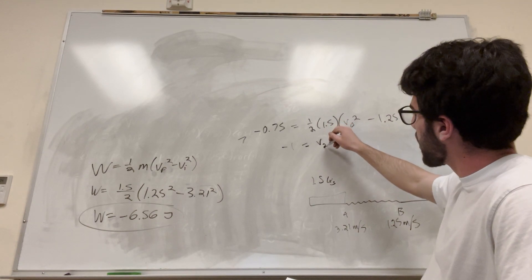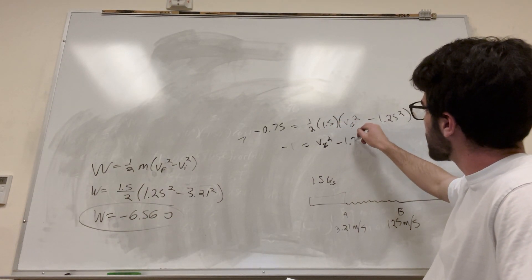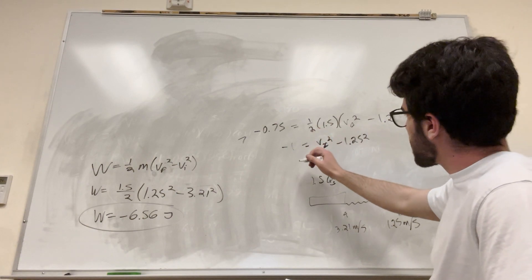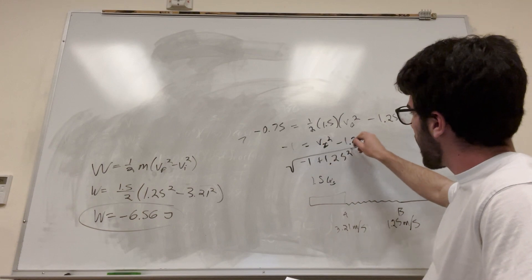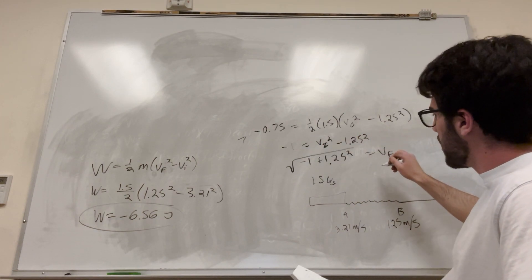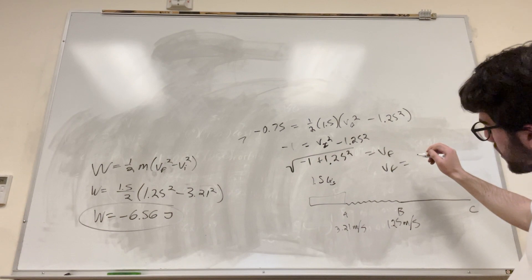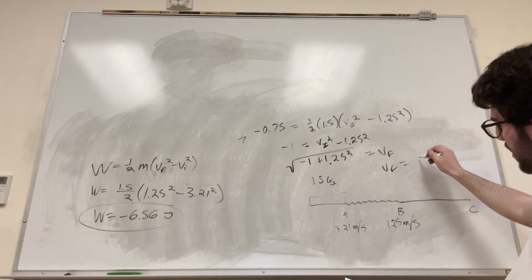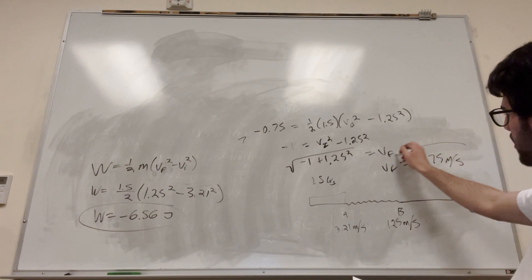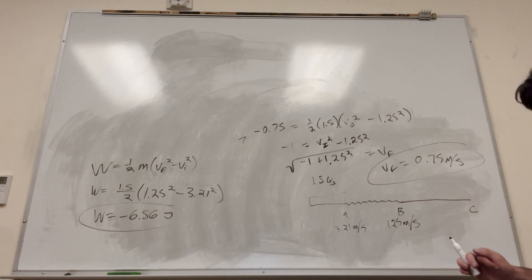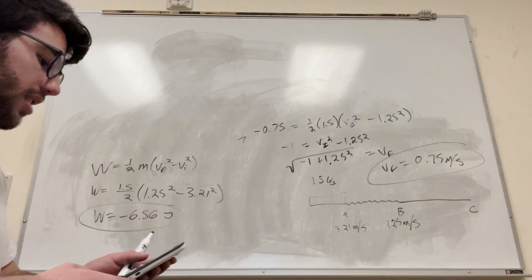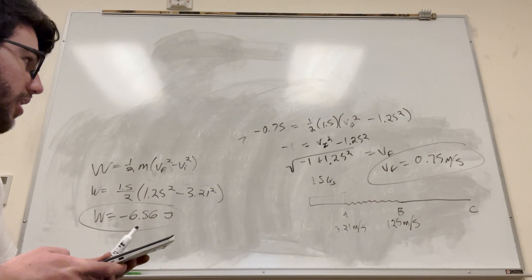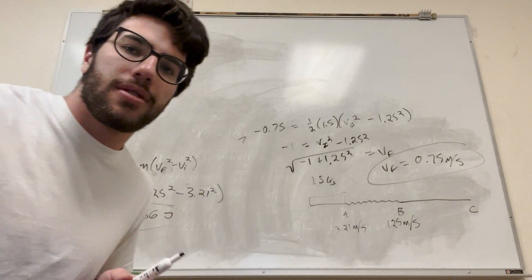So negative 1 equals velocity final squared minus 1.25 squared. Add 1.25 squared to the other side: negative 1 plus 1.25 squared, then take the square root of all of that — that equals velocity final. Let me calculate that: square root of negative 1 plus 1.25 squared. Yep, okay. That gives us 0.75 meters per second.